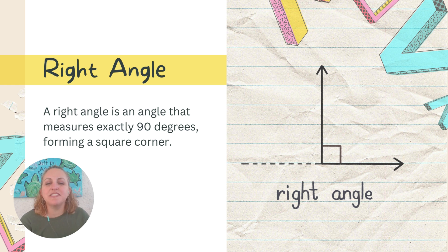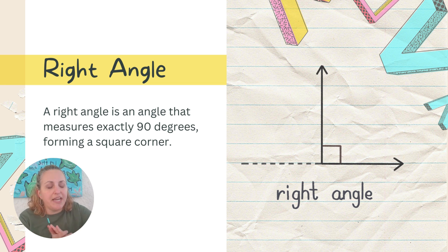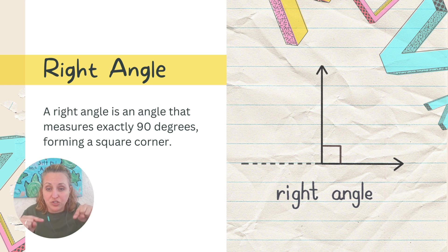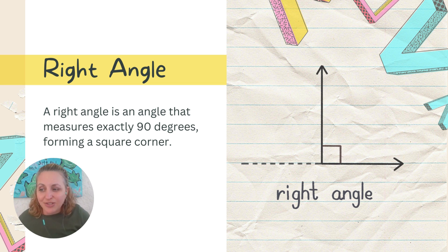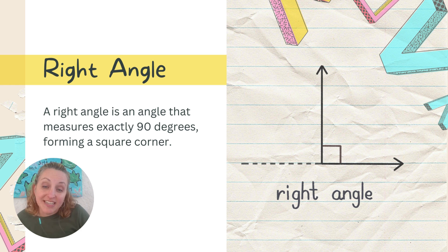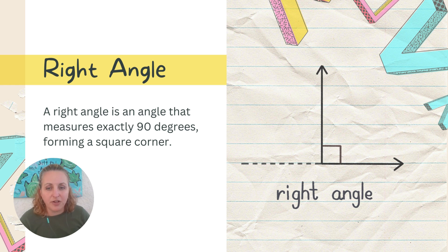Next in our angles lineup is the right angle — it's just right! A right angle is exactly 90 degrees. You see right angles all around you: where walls come together, the corners of your doors, edges of pictures, pieces of paper, sides of your books. Right angles are everywhere. You see right angles in squares and rectangles. There is a little square symbol in the corner that signifies a right angle — when you see that little square, you know the angle is exactly 90 degrees. Memorize that number.